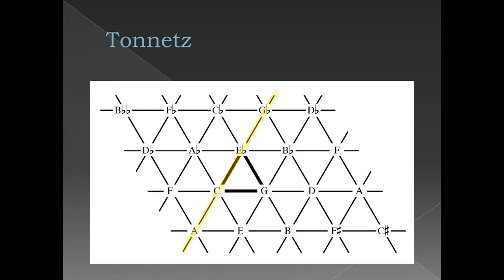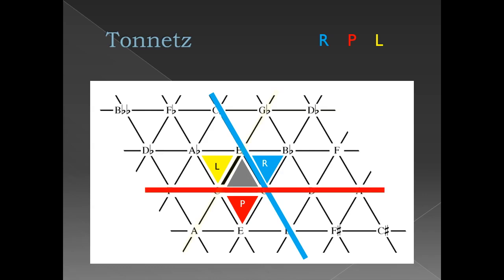Beginning with the gray clang C minor, we can apply R, P, and L to reach new clangs respectively: E flat major, C major, and A flat major. In this way, R will always reflect over the line of major thirds, therefore preserving the major third. P preserves the perfect fifth, and L preserves the minor third.